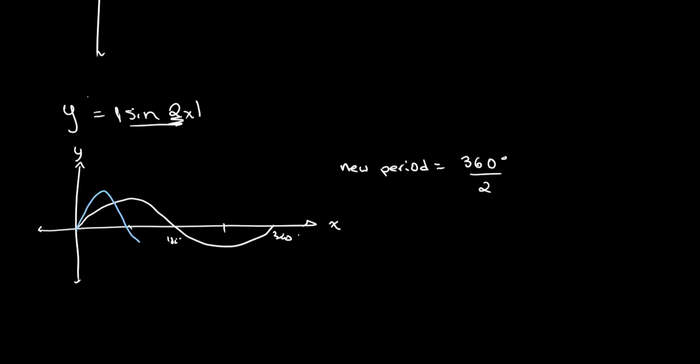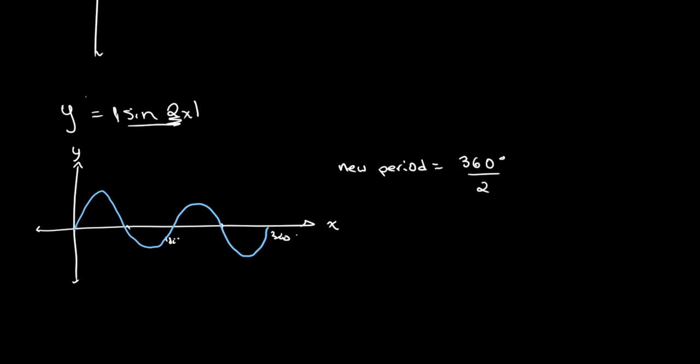So this is the graph of y equals sine 2x. Now what we want to do is take the absolute value. So we simply reflect all the negative parts of our graph. That's this part and this part in the x-axis. This will come like this, and then this part will come over here. And we can erase what we had before.